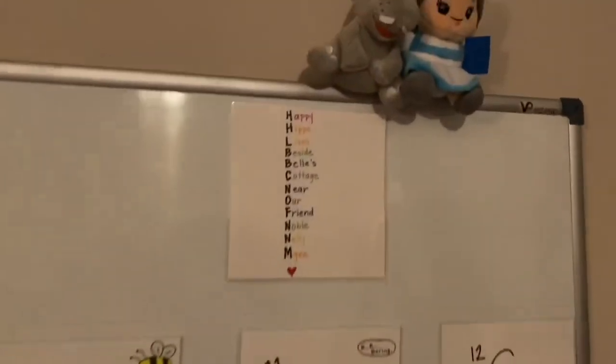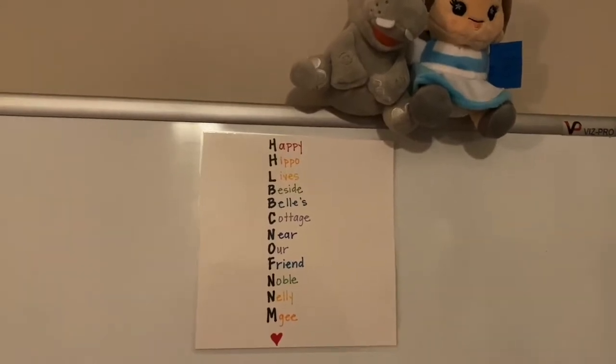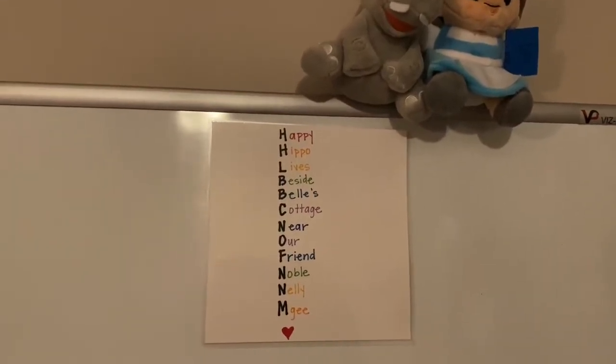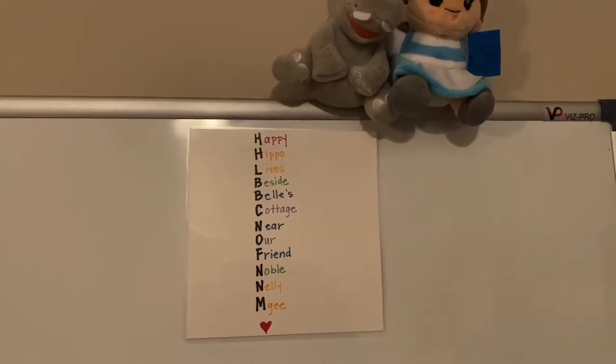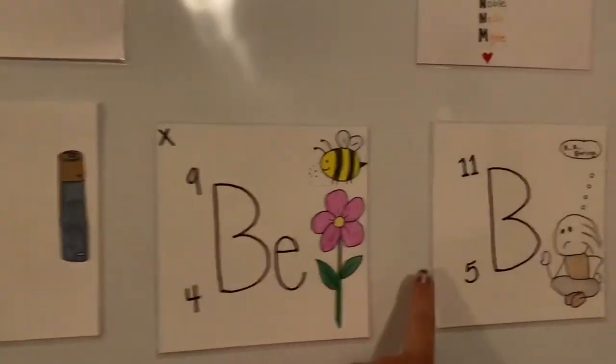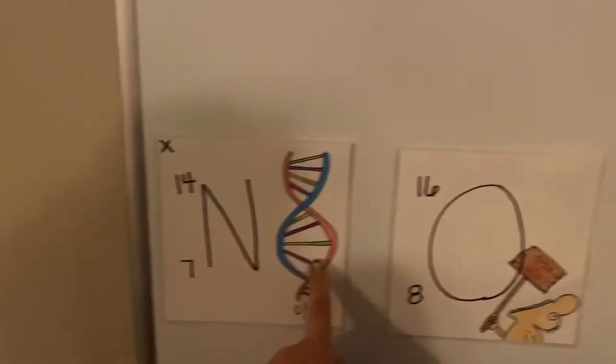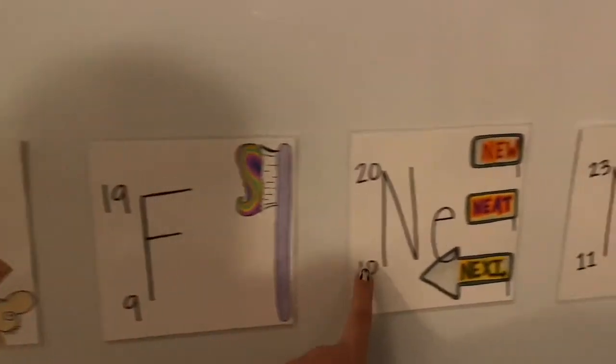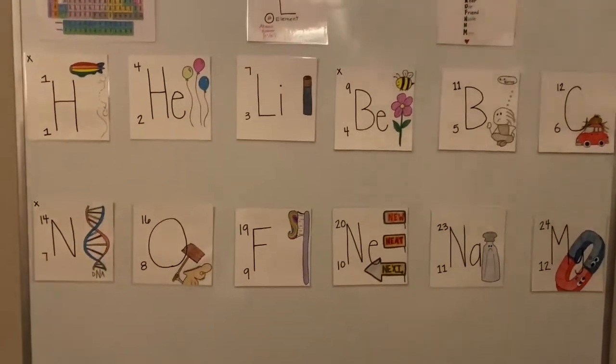Here it is. And I have little mascots. Look at Belle and Happy Hippo up here. Here is our acronym. Happy Hippo lives beside Belle's Cottage near our dear friend, noble Nellie McGee. If you look here, you can see Happy Hippo lives beside Belle's, number 5, cottage, number 6, near our friend, noble Nellie McGee. And that's number 12. So, that's how you can remember the order 1 through 12.